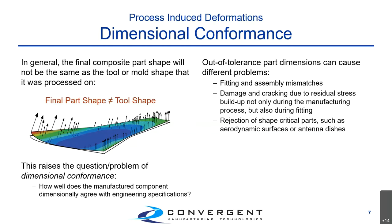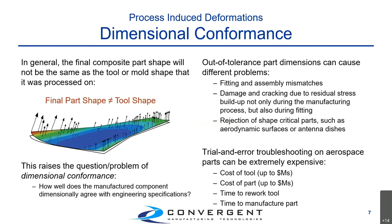Out-of-tolerance part dimensions resulting from manufacturing can cause many different problems. Number one is problems with fitting and assembly. If we manufacture a wing skin, for example, and we want to assemble it to the rest of the wing structure — if it's out of spec with tolerances, you might not be able to. You can also have damaging cracking if you try to deform the part to fit to the assembly, or if you have parts with critical shapes such as aerodynamic surfaces on an aircraft or an antenna dish, the part gets rejected straight out of the autoclave.